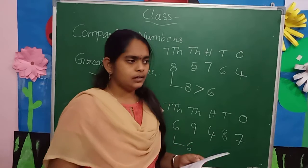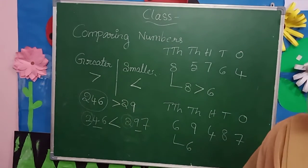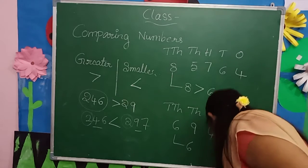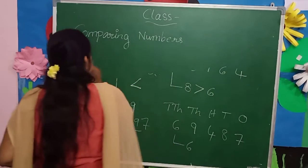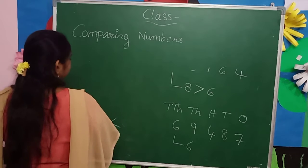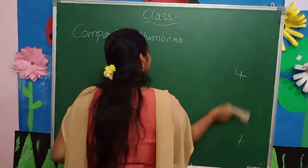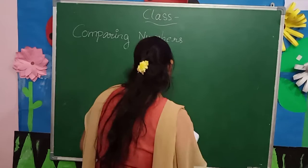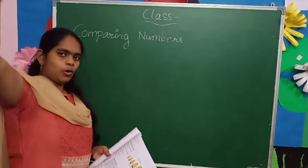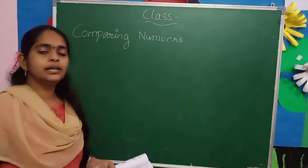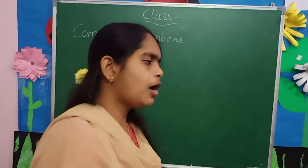Next, we also compare numbers using ascending and descending order. Ascending order means small number to big number. Descending order means big number to small number.